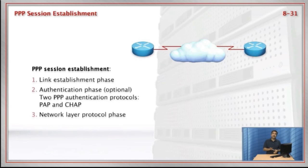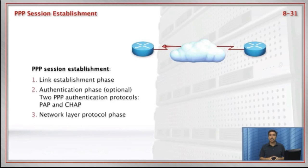Finally, the last step in session establishment is the Network Layer Protocol phase. What network layer protocol will be used by the session, and how will it be configured? NCP packets are sent to negotiate the necessary settings. If IP is chosen and configured, network layer datagrams can now be sent over the established session. So, three steps: establish the link, optionally authenticate, and negotiate the network layer — and the PPP session is complete.